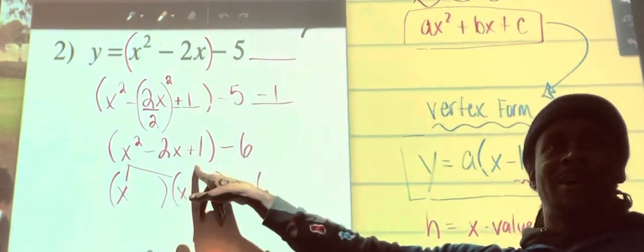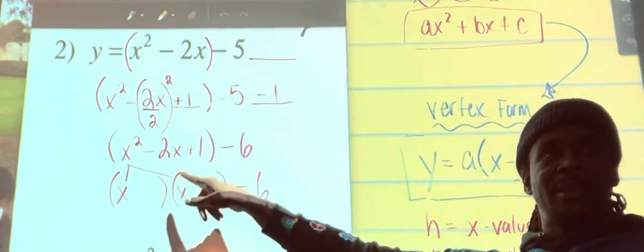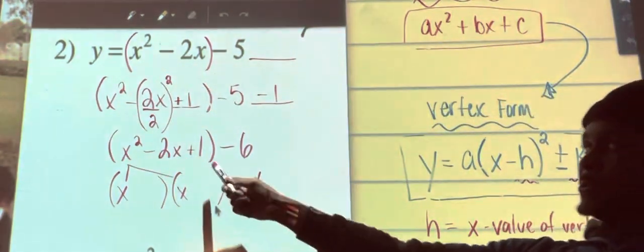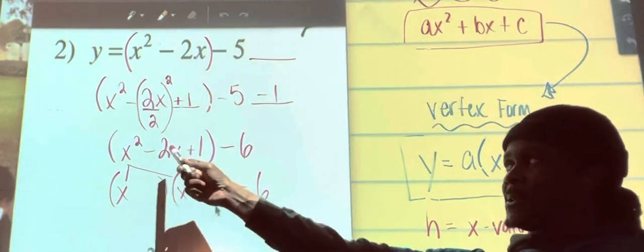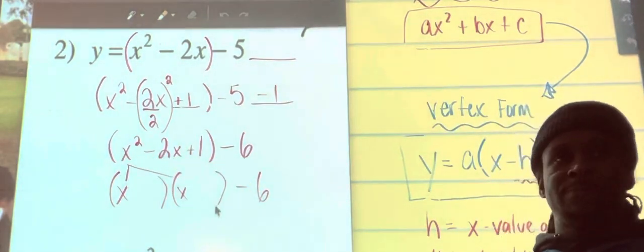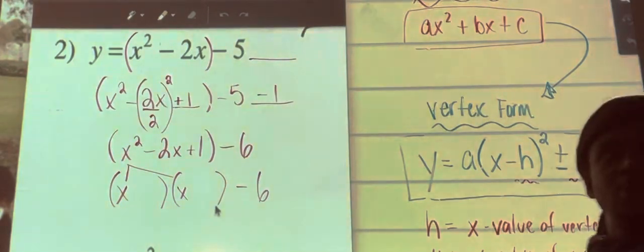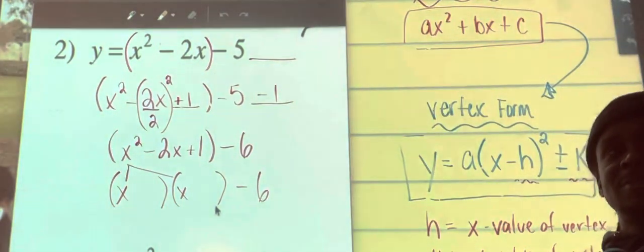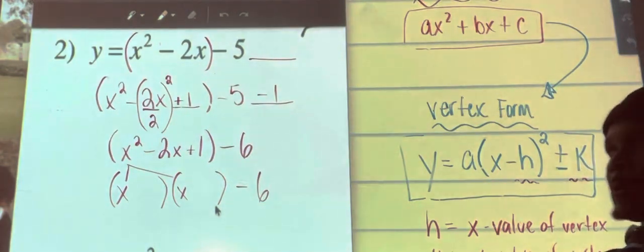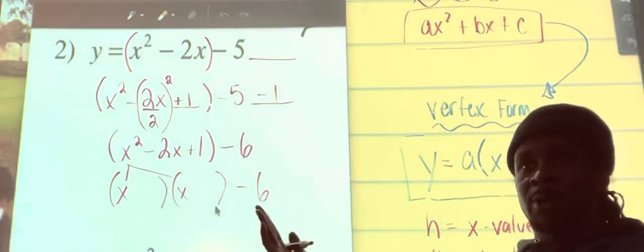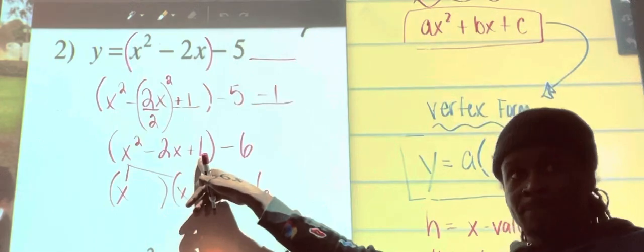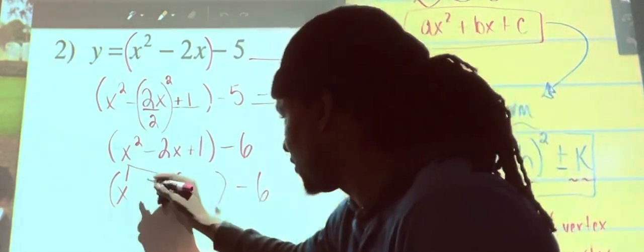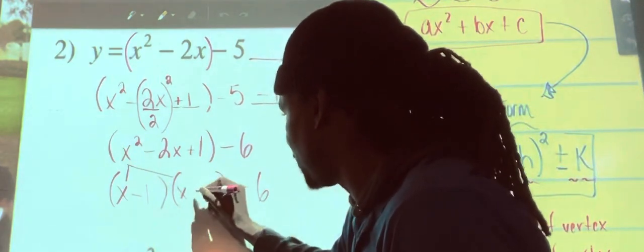Now, I need two numbers that multiply to give me one that add together to give me negative two. Two numbers that multiply to give me one that add together to give me negative two. Negative one and negative one. Nope. Negative one and negative one. What's negative one times negative one? One. And negative one plus negative one is negative two. So your answer is x minus 1 and x minus 1.